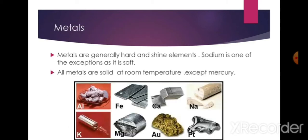We have tools, utensils, and jewelry made from silver, copper, iron, gold, and aluminium. Using pressure like hammering or rolling, we can deform these materials into various shapes. Such elements are called malleable — malleable means the material may be flattened into thin sheets or various shapes. Metals are generally hard and shiny elements. Sodium is one exception as it is soft.